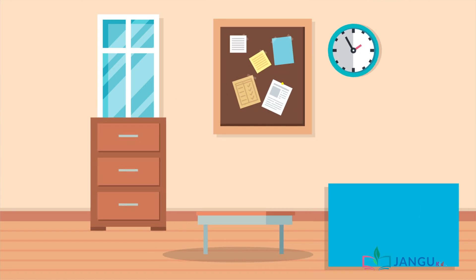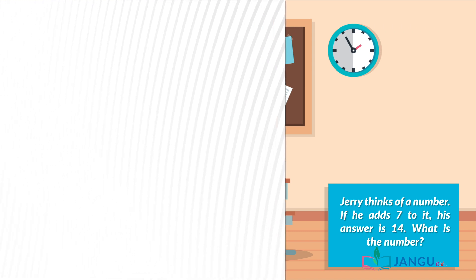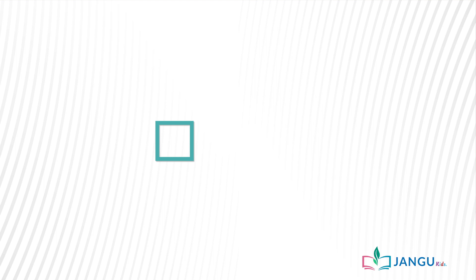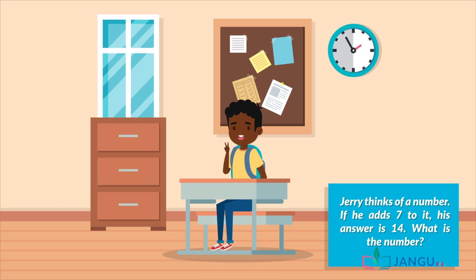Now it's time to solve some real open sentence word problems. Jerry thinks of a number; if he adds 7 to it his answer is 14. What is the number? We do not know the number Jerry is thinking of, so we represent it with a blank square box: unknown + 7 = 14. By collecting like terms, unknown = 14 − 7 = 7. Therefore the number Jerry thinks of is 7.